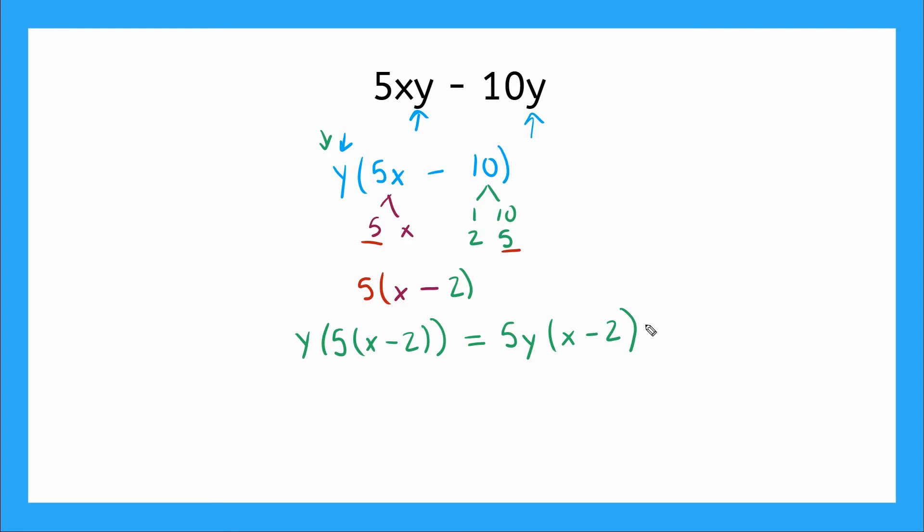Now let's double check using the distributive property to make sure that this right here is our correct factored form. So I'm going to multiply 5y × x and that will give me 5yx minus 5y × 2 would give me 10y. Now, does this expression match this expression?